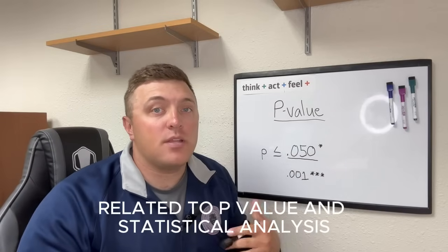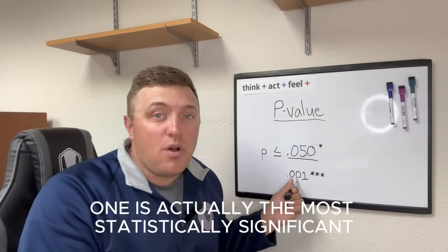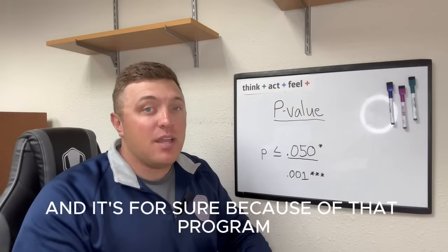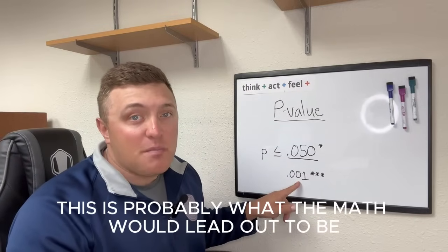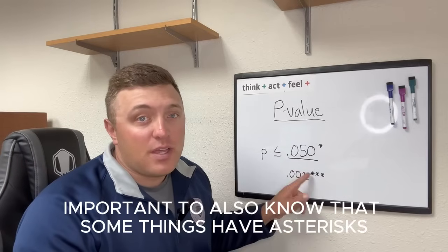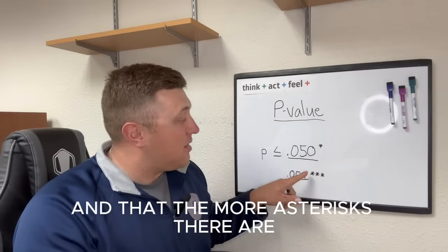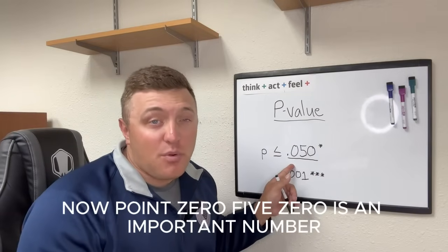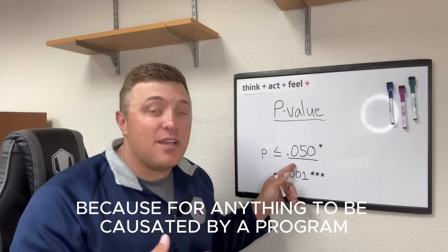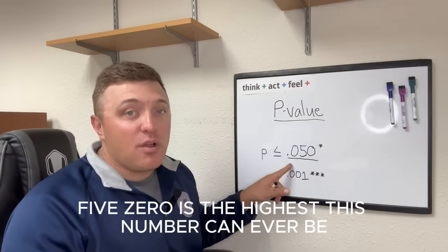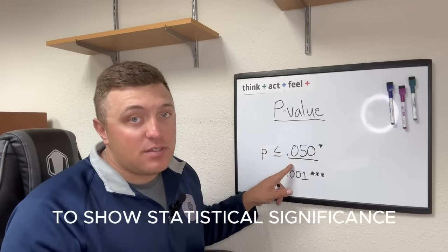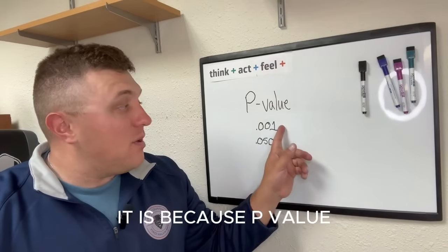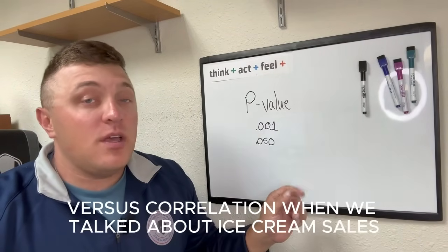These are two very important numbers to know related to p-value and statistical analysis. 0.001 is actually the most statistically significant something can get — meaning that if a program is definitely causing something to happen, this is probably what the math would show. It's also important to know that some things have asterisks related to the program studied, and the more asterisks there are, usually the more statistically significant that finding is. Now, 0.050 is a critical number: for anything to be considered caused by a program you're implementing, 0.050 is the highest this number can ever be to show statistical significance.